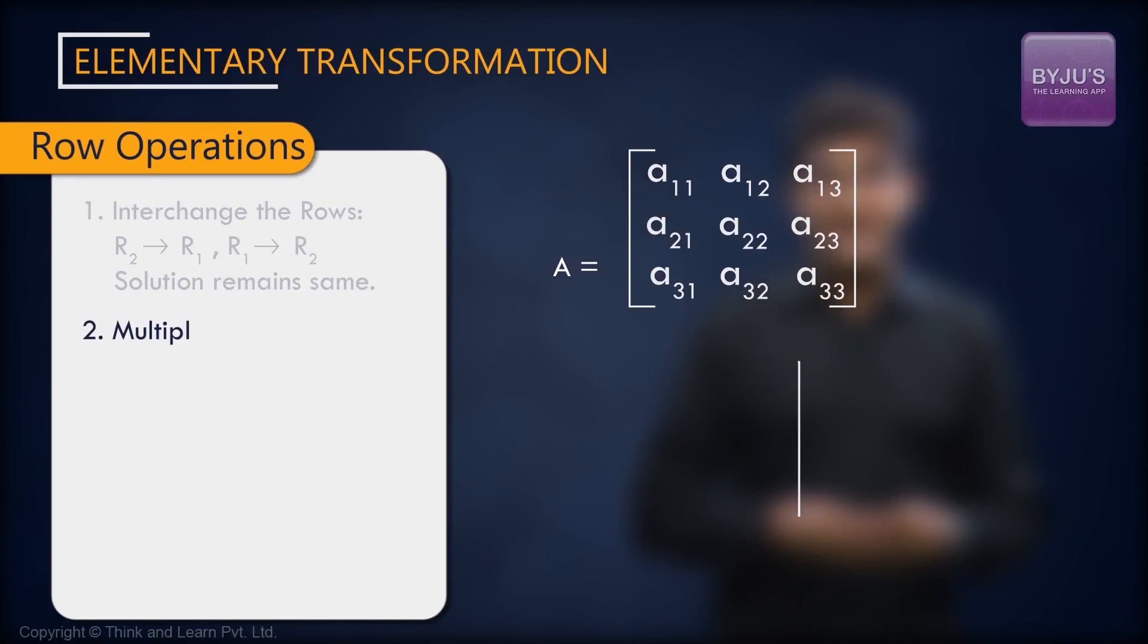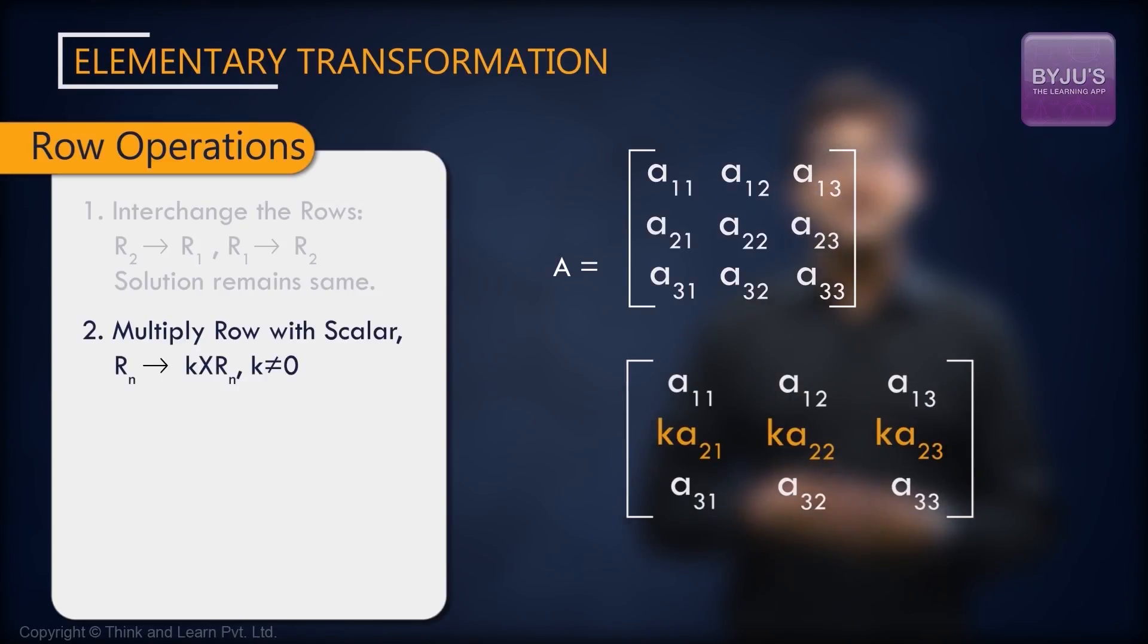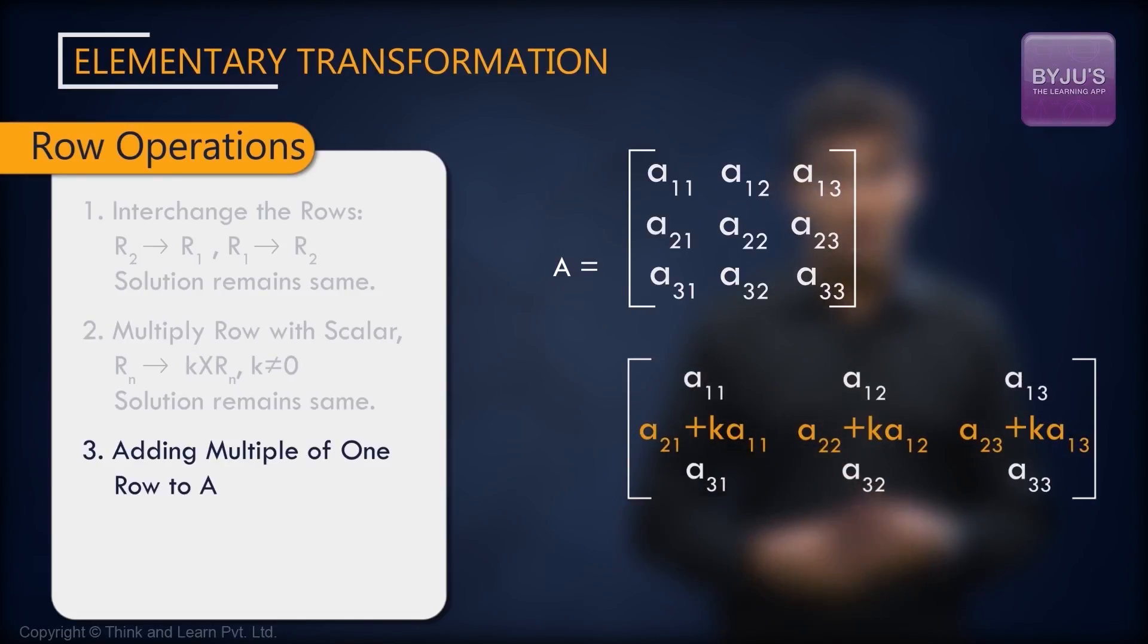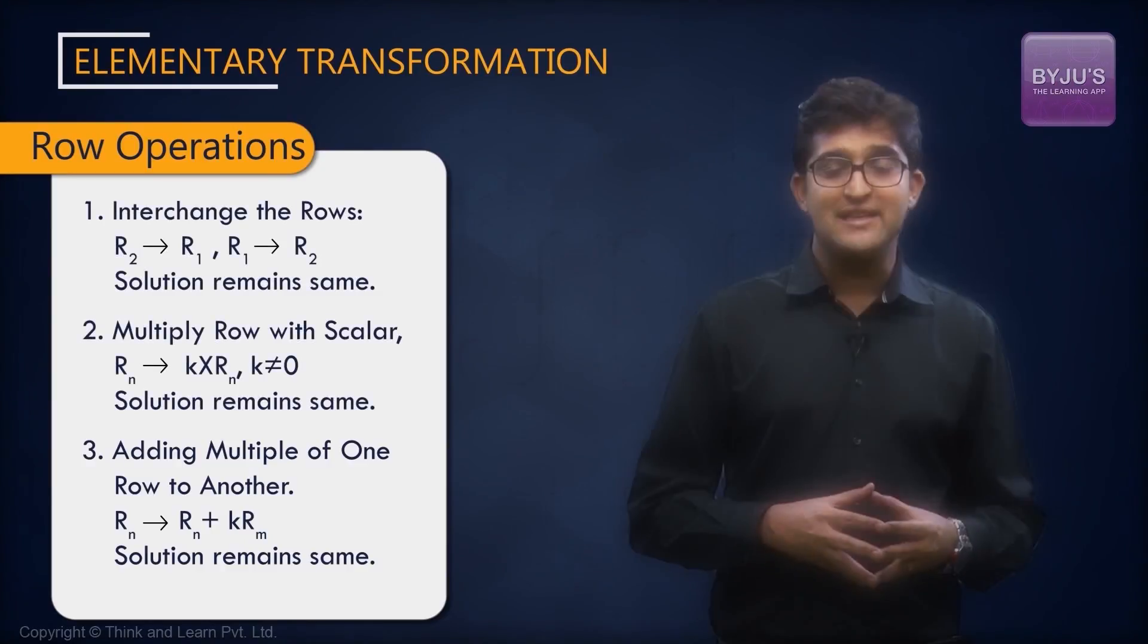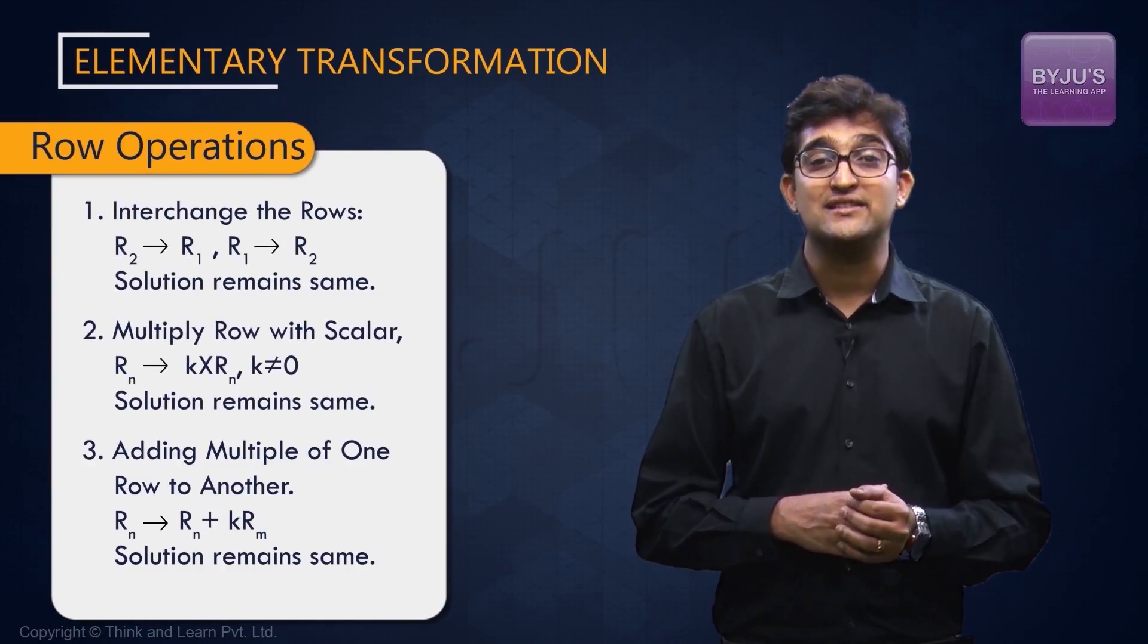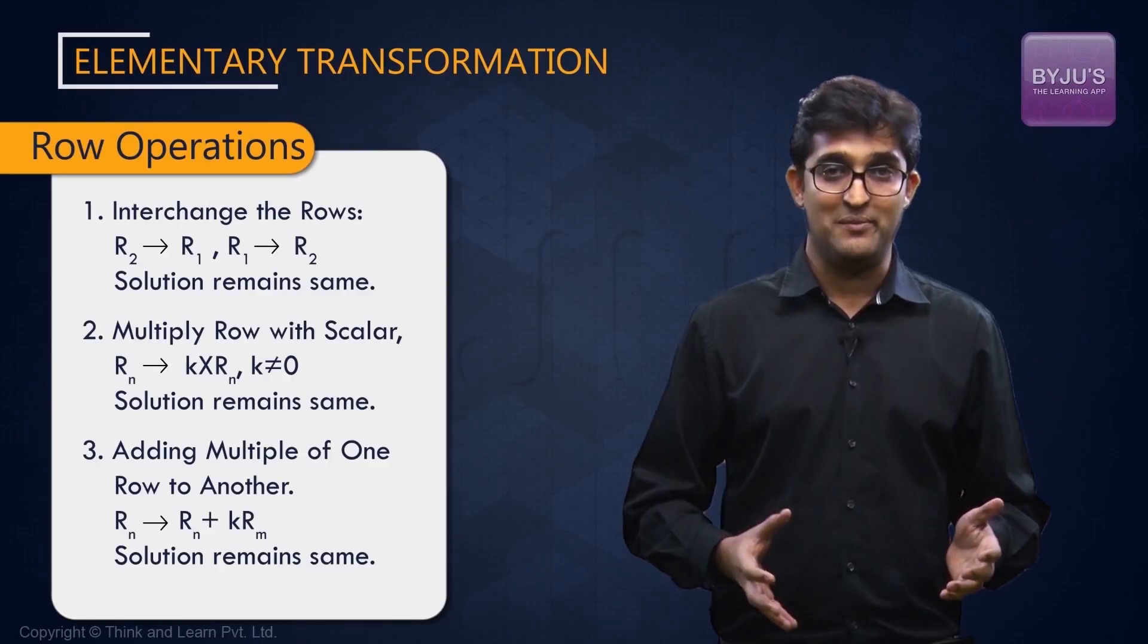Operation number two is multiplying any of the rows with a constant non-zero number. And operation number three is adding the multiple of a row to another row. After doing all these things, the new matrix is called as the row equivalent of the original matrix.